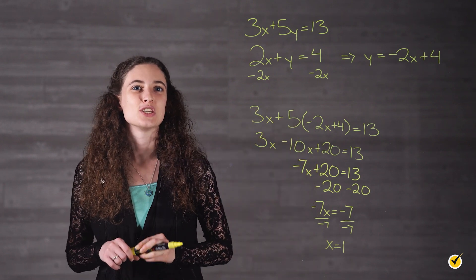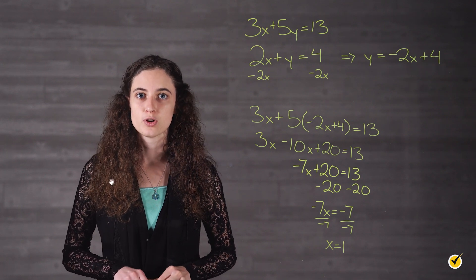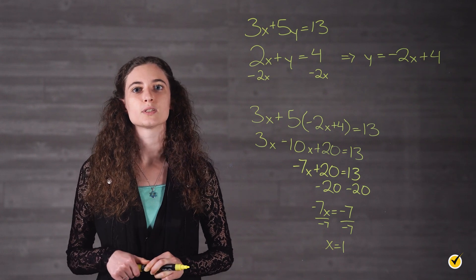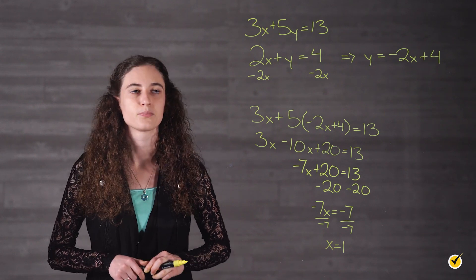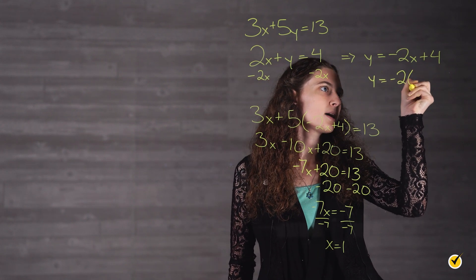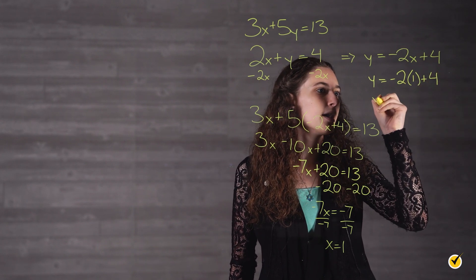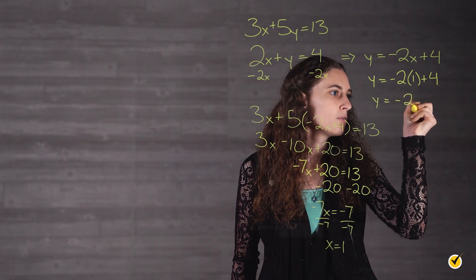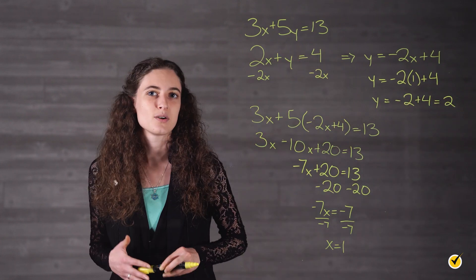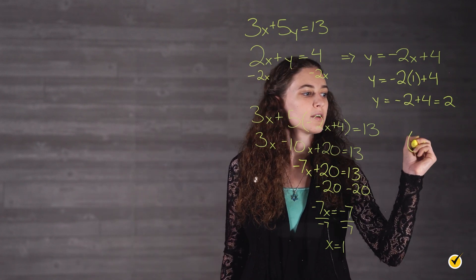We subtract 20 from both sides, giving us negative 7x equals negative 7. Dividing both sides by negative 7, we get x equals 1. Now we just need to use this value of x to solve for y. Step 4: we plug x equals 1 into the equation y equals negative 2x plus 4, giving us y equals negative 2 times 1 plus 4. Simplifying, y equals negative 2 plus 4, which equals 2. So the solution for this system of equations is 1, 2.